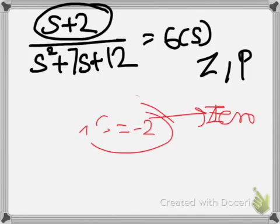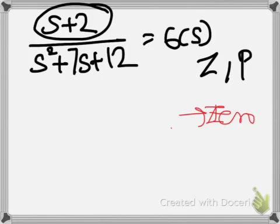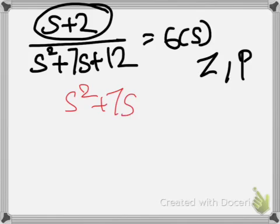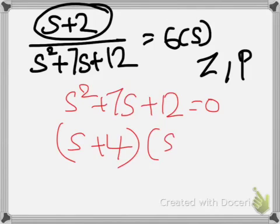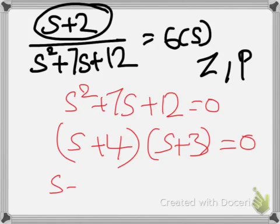The poles of a transfer function are the roots of the denominator. So here we set s² + 7s + 12 = 0. Factoring this we get (s + 4)(s + 3) = 0, which gives s = -4 and s = -3.